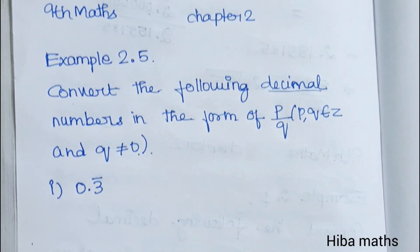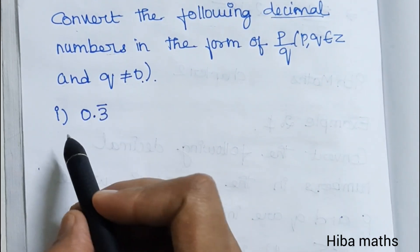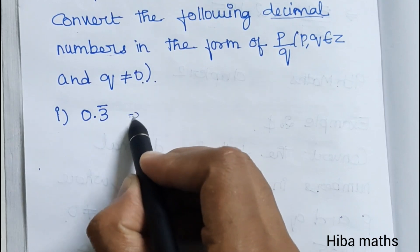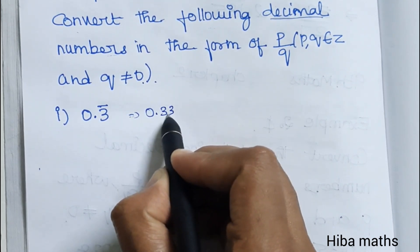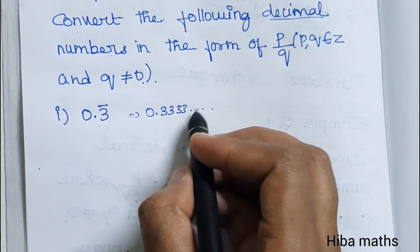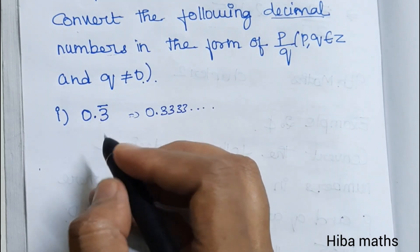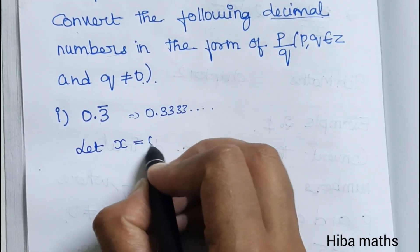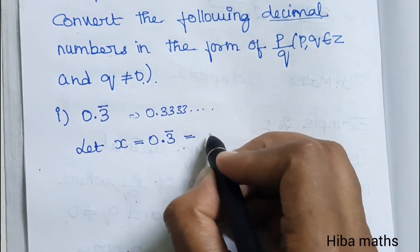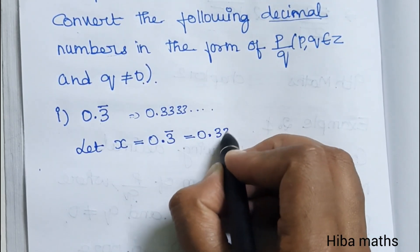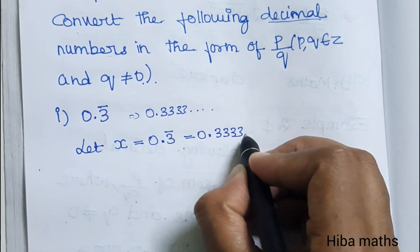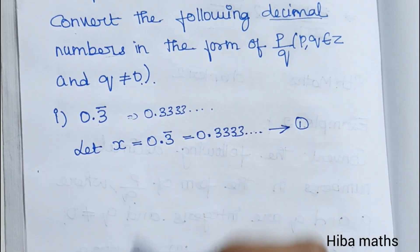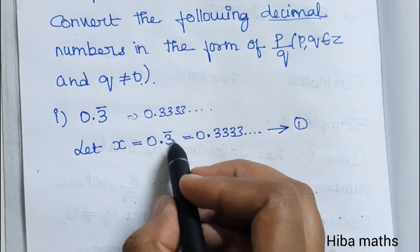The first question is 0.3 bar. So 0.3 bar is 0.33333... repeating. Let x equal to 0.3 bar, that is x = 0.33333...